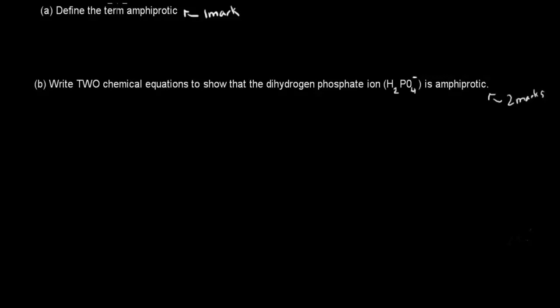The first question says, define the term amphiprotic, which is worth one mark. And the second part, B, write two chemical equations to show that the dihydrogen phosphate ion H2PO4- is amphiprotic. And it's worth two marks. So when you're ready, pause the video and attempt the question.